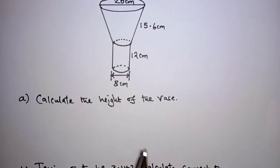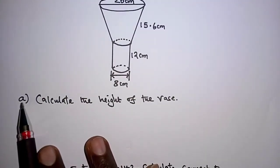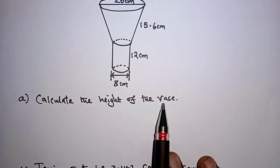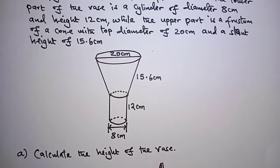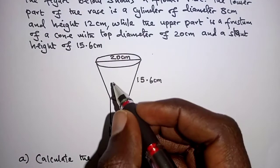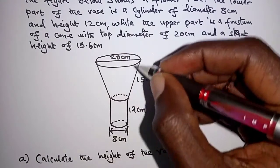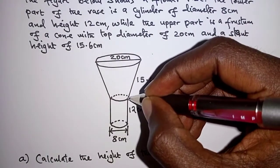Well, for part A, calculate the height of the vase. The first thing I wish we take note of here is that if we continue with a line from this point